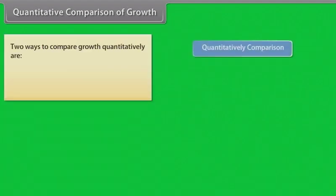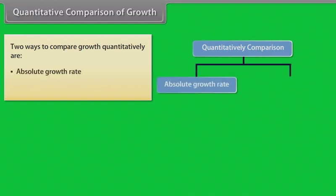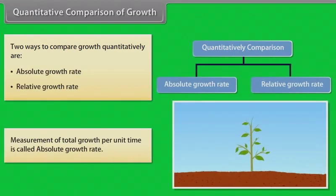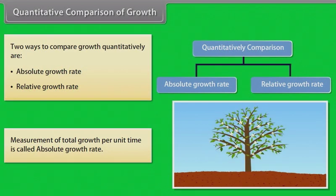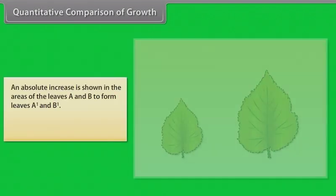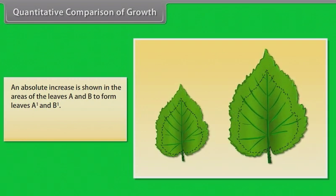Quantitative comparison of growth. Two ways to compare growth quantitatively are absolute growth rate and relative growth rate. Measurement of total growth per unit time is called absolute growth rate.